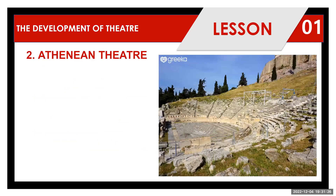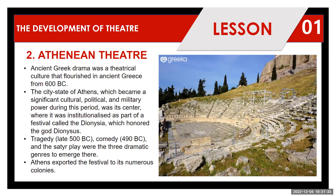Another is the Athenian theatre. This originates from Greece. In ancient Greek drama, there was a theatrical culture that flourished in ancient Greece from 600 BC. The city-state of Athens, which became a significant cultural, political, and military power during this period, was its centre, where theatre was institutionalized as part of a festival called Dionysia, which honoured the god Dionysus. Tragedy in the late 500 BC, comedy in the 490 BC, and the satire play were the three dramatic genres to emerge from this period. Athens exported the festival to its numerous colonies.